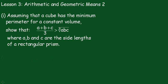Lesson 3: Arithmetic and Geometric Means 2, Part 1. Assuming that a cube has the minimum perimeter for a constant volume, show that (a + b + c) / 3 is greater than the cube root of abc, where a, b, and c are the side lengths of a rectangular prism.